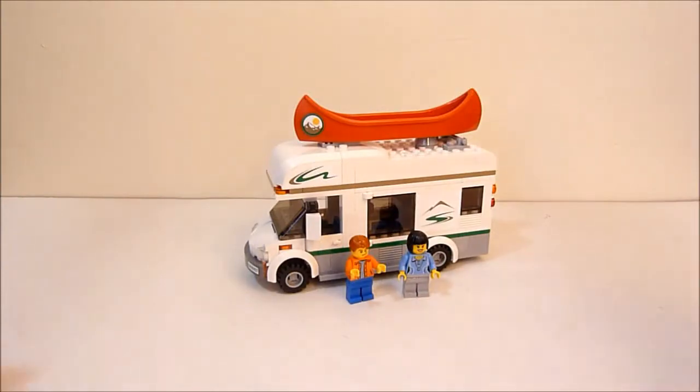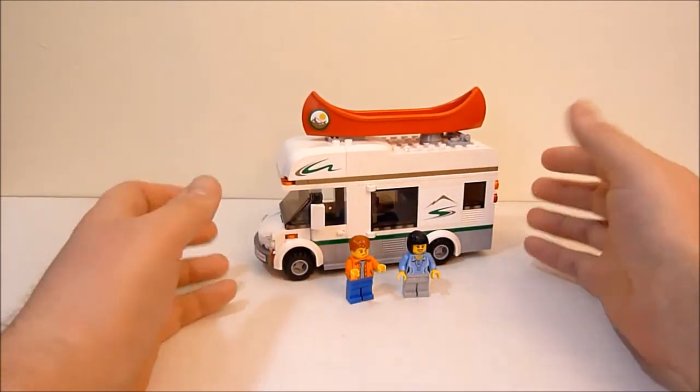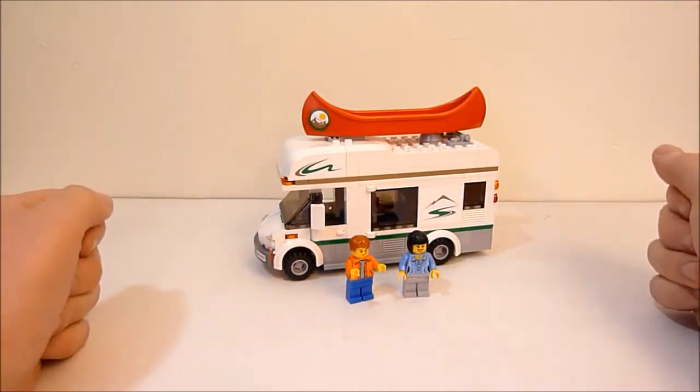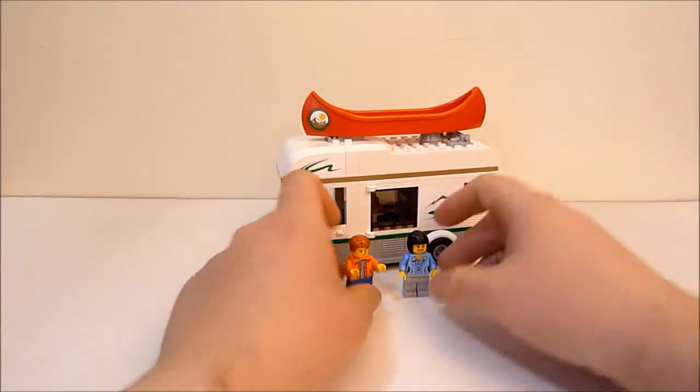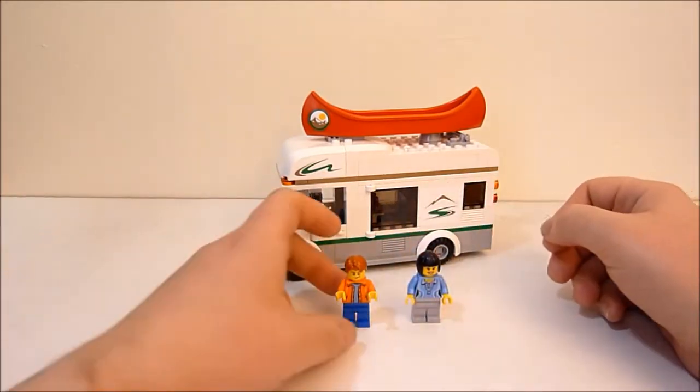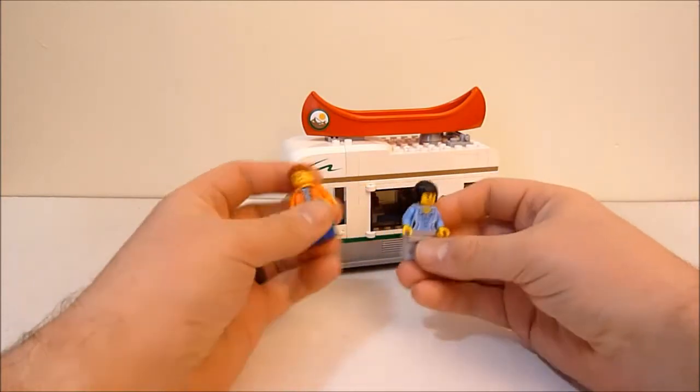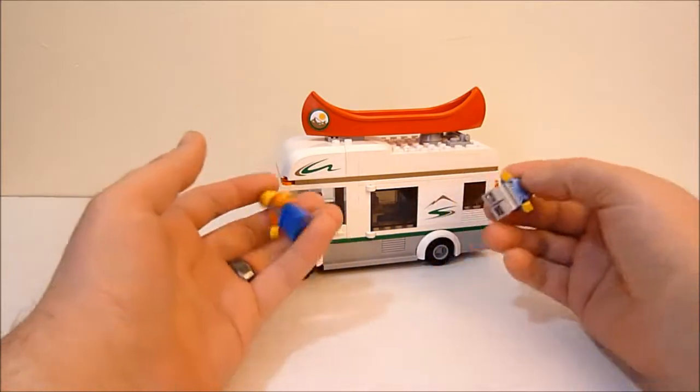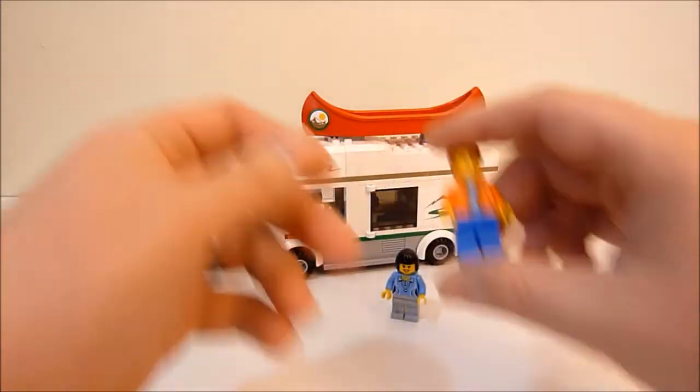All right guys, here it is, the camper van. And as I normally do with these Lego reviews, I'm going to start off with the minifigs first. And yeah, it should be pretty quick. So you get two minifigs in this set. A male and a female. And they could be related. I don't know. It's up to you. Whatever makes you happy. But we're going to start with this guy right here.